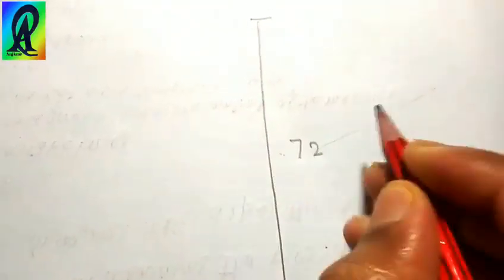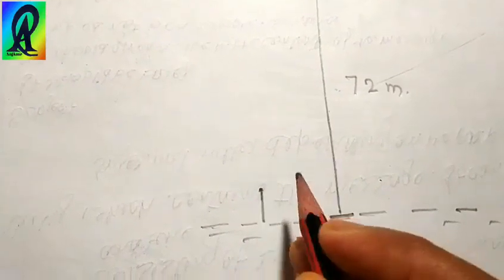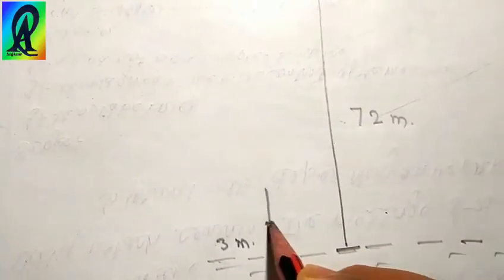This is the Minar height, that is 72 meters. And this is the ground. This is the ground. And the height of our classroom is 3 meters, 1 meter, and the height of our classroom. It is the ground.